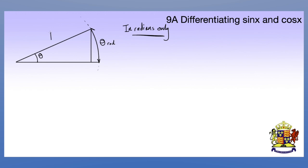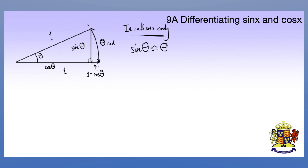The length on either side is 1. So we have theta radians as our arc length, and all we do is think about what these two lengths are. This one must be sine theta because it's opposite, and this one at the bottom must be cos theta. This length in here is therefore 1 minus cos theta. Now the first thing to think about with small angle approximation is when this gets very very small, the opposite length and the arc length are roughly the same, so sine theta roughly equals theta for small angles.